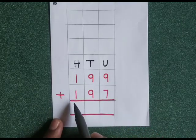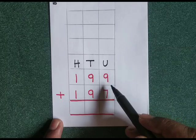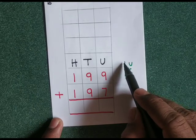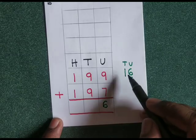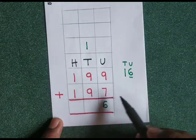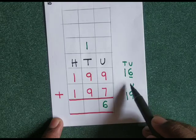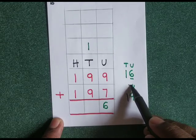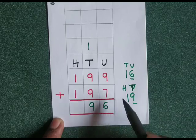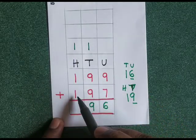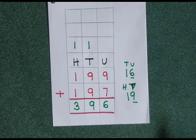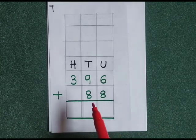199 plus 197. 9 plus 7 is equal to 16. Write 6 at the units place, carry 1 at the tens place. 1 plus 9 is 10, 10 plus 9 is 19. Write 9 at the tens place, carry 1. 1 plus 1 is 2, 2 plus 1 is 3. The answer is 396.